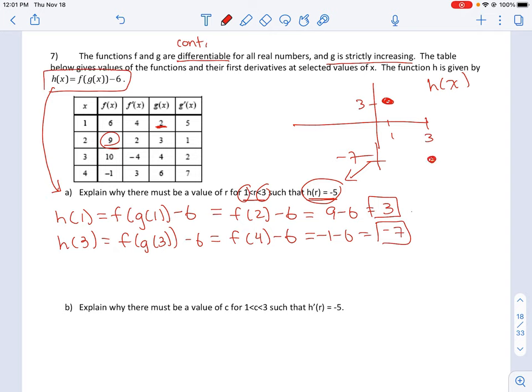We're trying to prove that somewhere between 1 and 3, it has to hit a y value of negative 5. This has to hold true because if the function is continuous from 1 to 3, it has to hit every single y value in between. That's what the intermediate value theorem says.